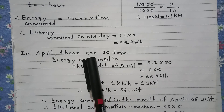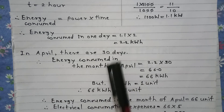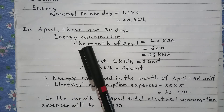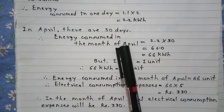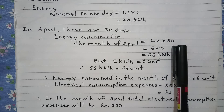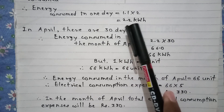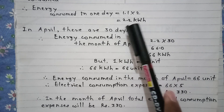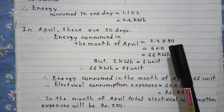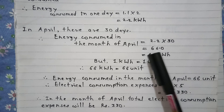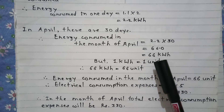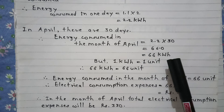In April, there are 30 days. Therefore, energy consumed in the month of April is equal to 2.2 into 30, because in one day energy is 2.2 and for 30 days it will be 2.2 into 30. That is equal to 66 Kilowatt hour.